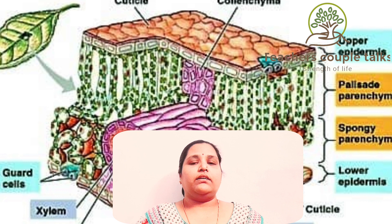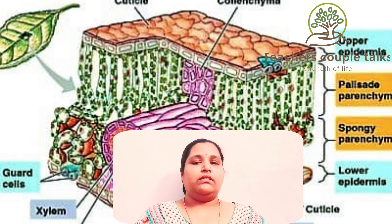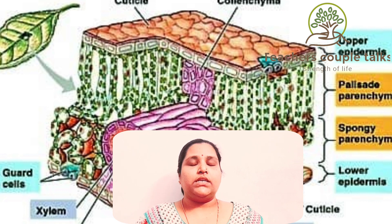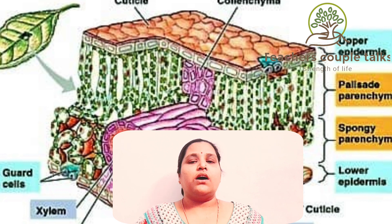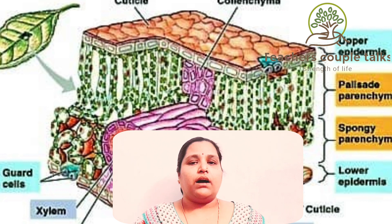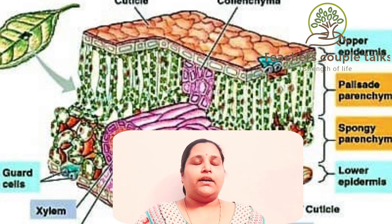In the middle, the mesophyll lies between the upper epidermis and lower epidermis. Below the upper epidermis, the elongated cells are called palisade parenchyma, which contain chloroplasts and perform photosynthesis.